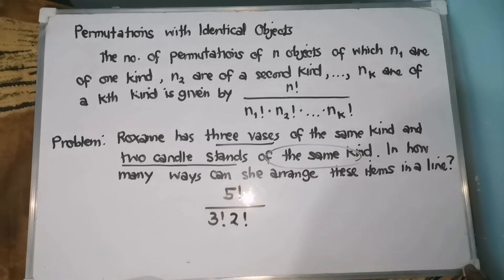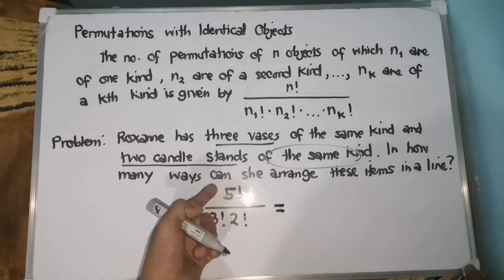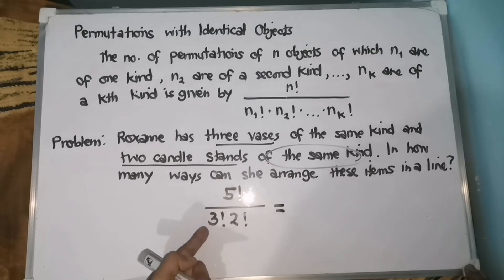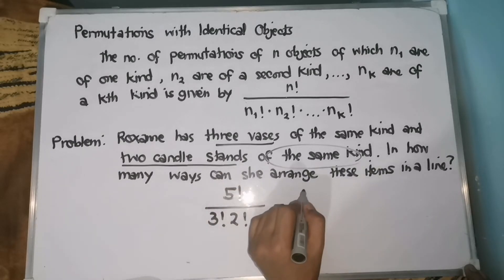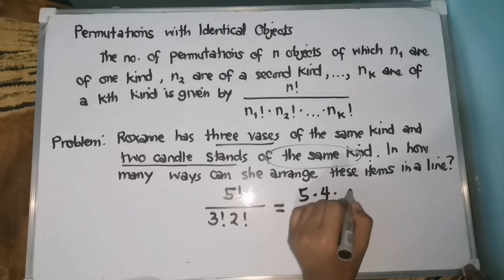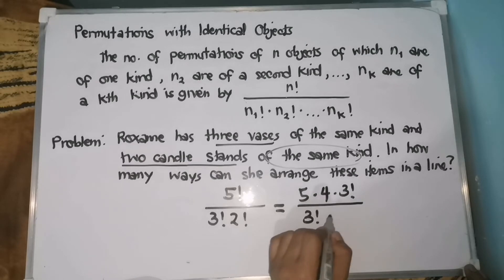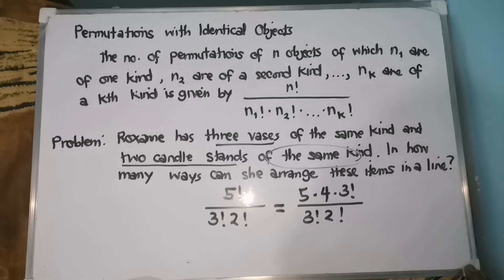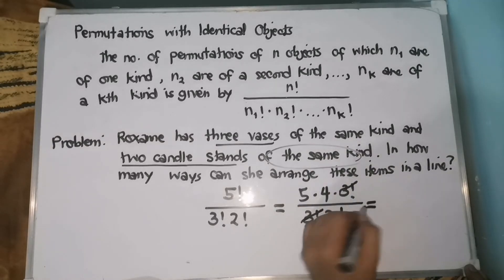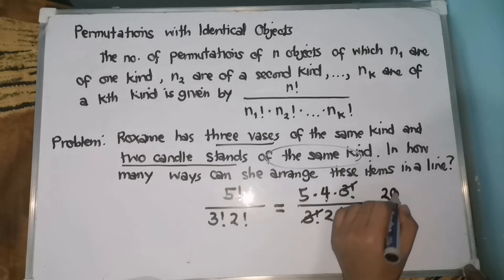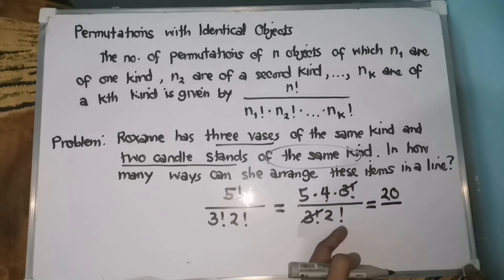So, as easy as that. To simplify this, we need to rewrite 5 factorial with the factor of 3 factorial para makancel natin. This can be written as 5 times 4 times 3 factorial, all over 3 factorial times 2 factorial. Ngayon, ika-cancel na natin yung common factors with the numerator and denominator, which is 3 factorial. That leaves 5 times 4, which is 20, over 2 factorial, which is 2.